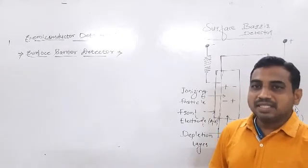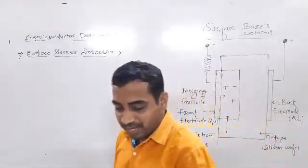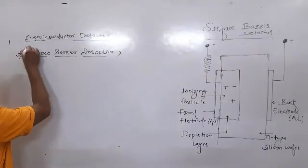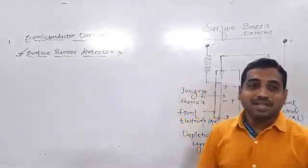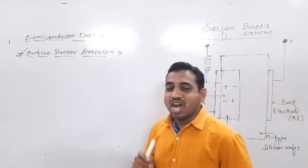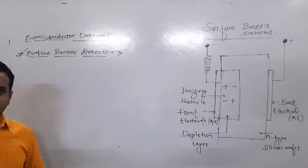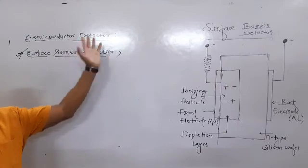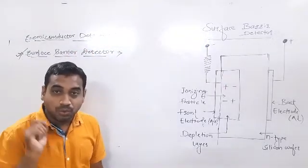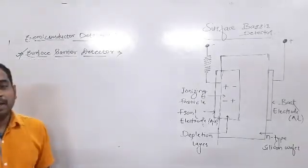Now we will see the second type of these semiconductor detectors — that is the surface barrier detectors. This surface barrier detector is useful for charged particle detection. The aim of all nuclear detectors is to detect the charged particles, and from that, these surface barrier detectors are mostly useful. It is very helpful to detect the charged particles.